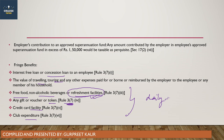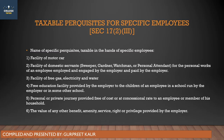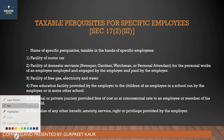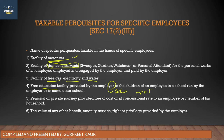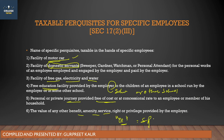Concessional loans are also taxable perquisites. If any servant facility is provided, or if free gas, electricity, or water is provided to the employee, those are taxable. If education facility is provided to the employee's children — even if it is the employer's own school — that is also a perquisite. Personal and private journeys provided free of cost are also included.